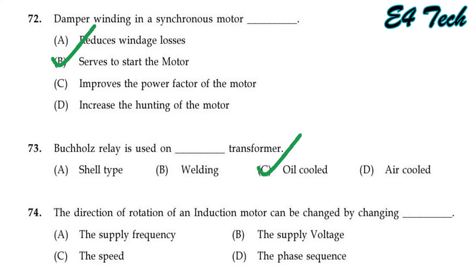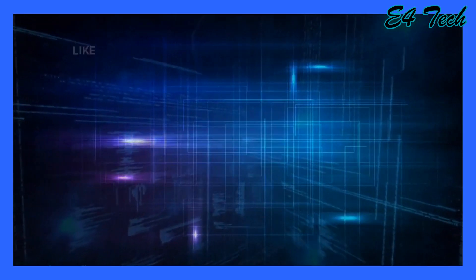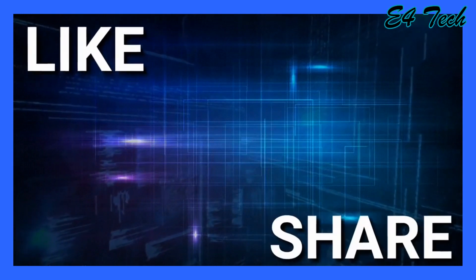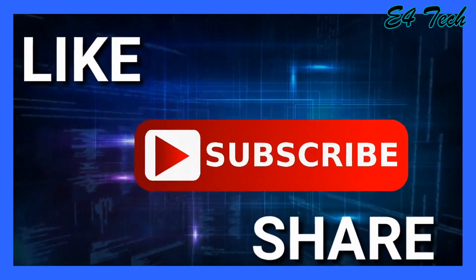The direction of rotation of an induction motor can be changed by changing the phase sequence of the supply. That is Option D, phase sequence.